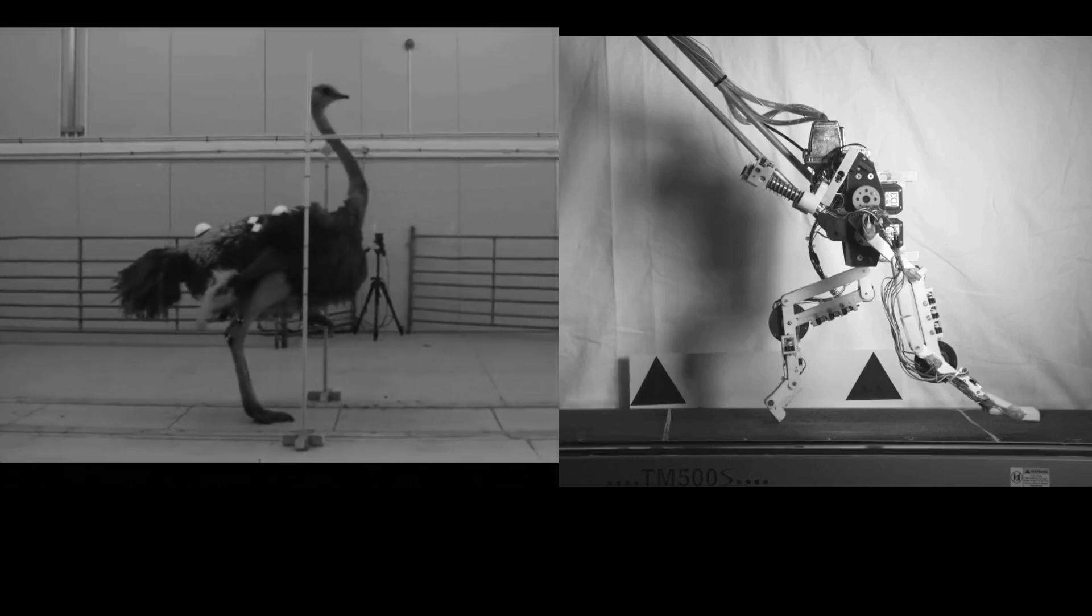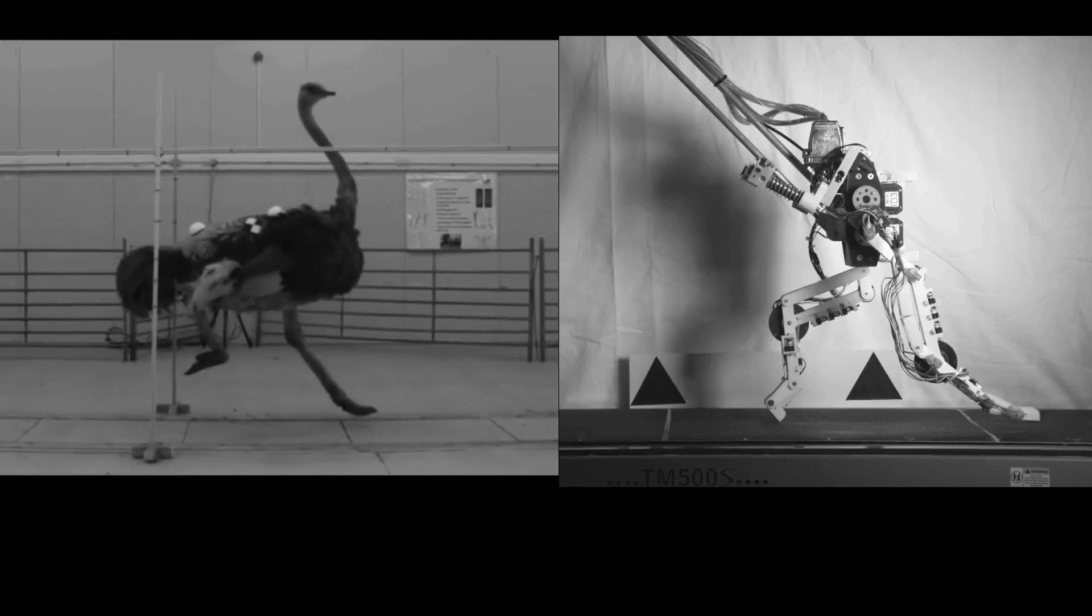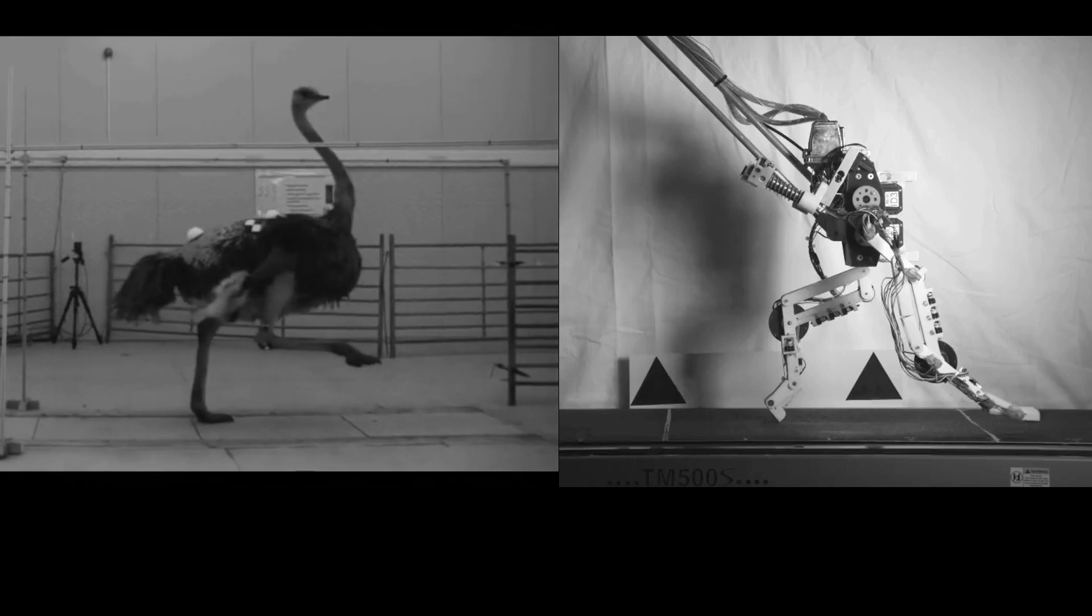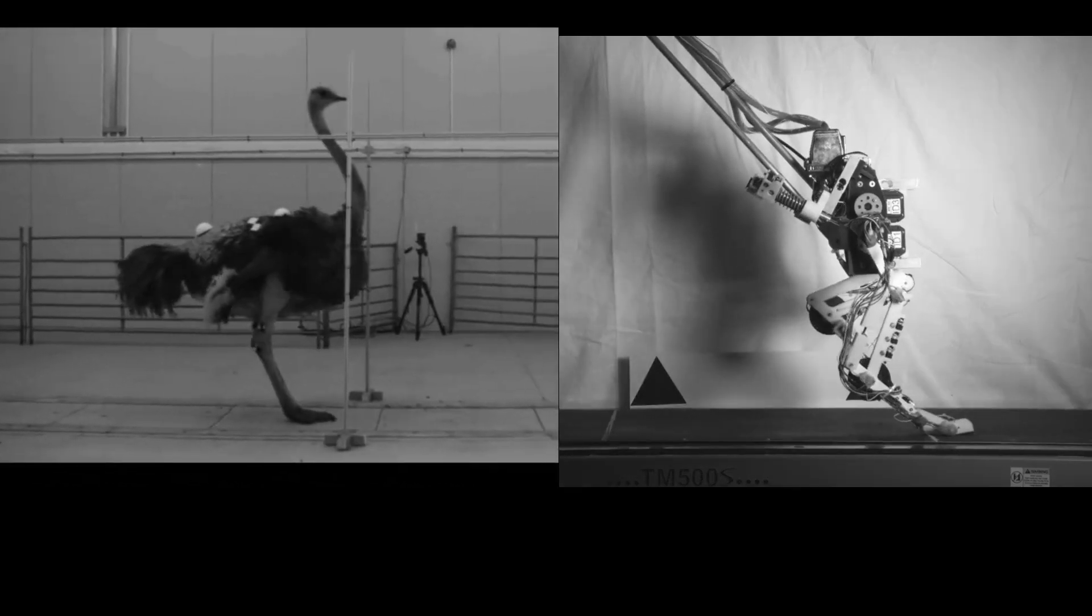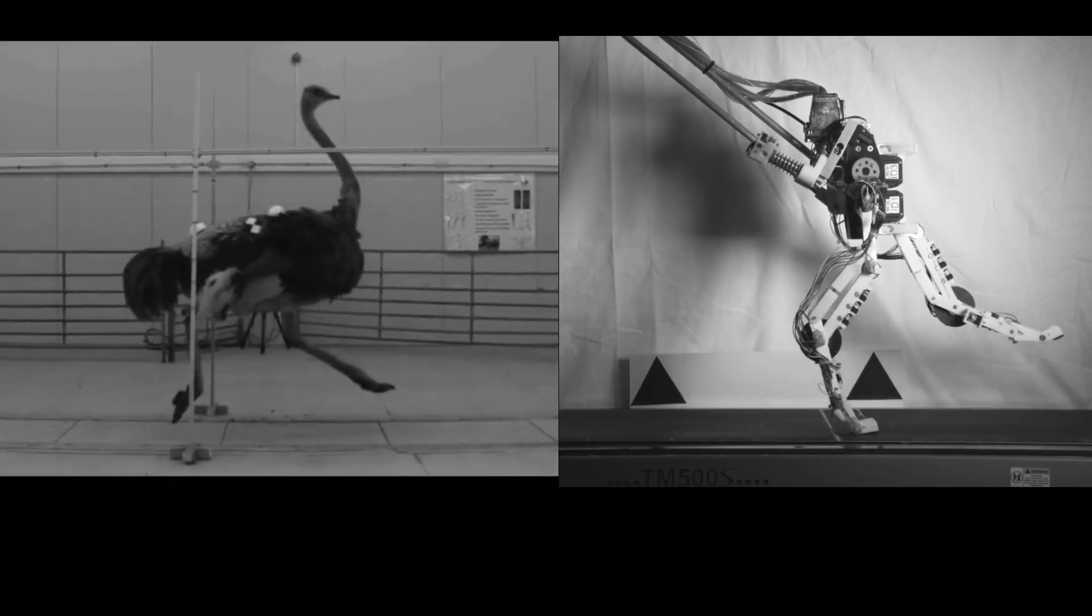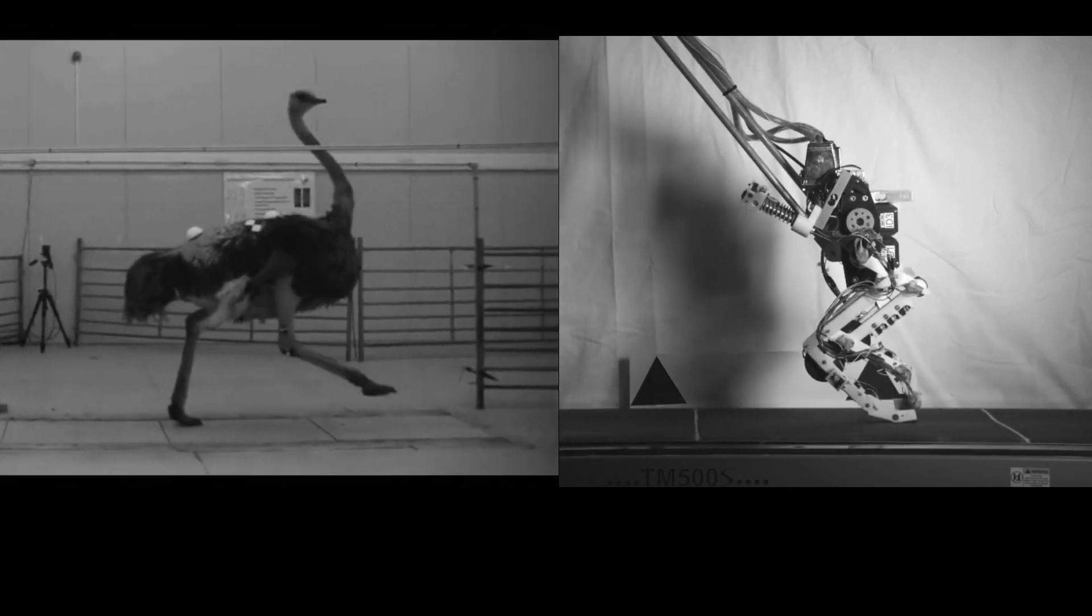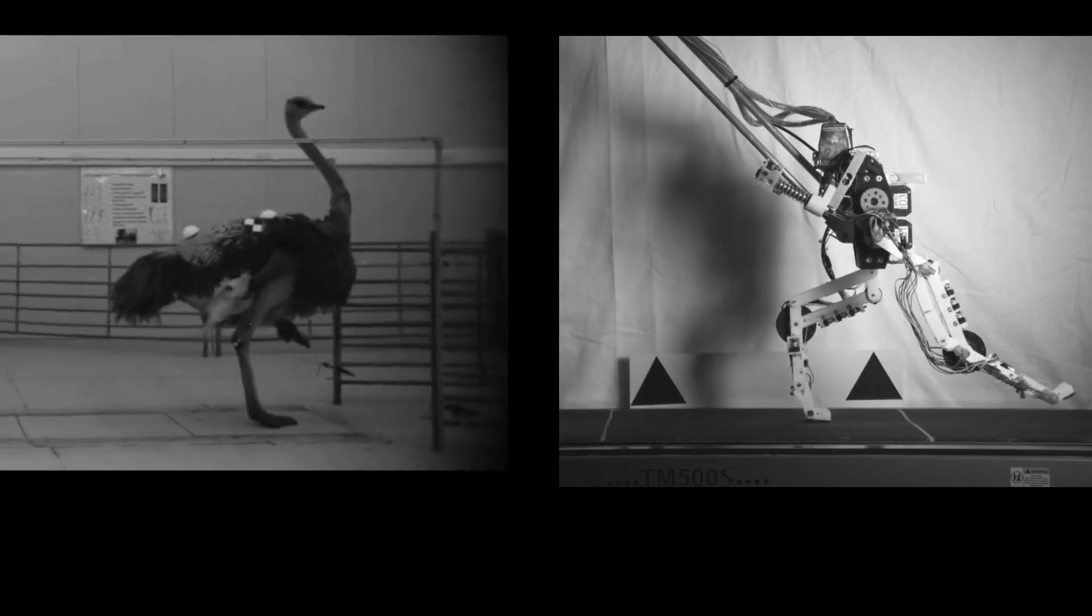Birds like emus and ostriches are excellent runners. Their speed and efficiency are enabled by well-developed multi-joint elastic mechanisms in the lower leg. BirdBot has been developed for economical running with simple control by emulating multi-joint elastic coupling.